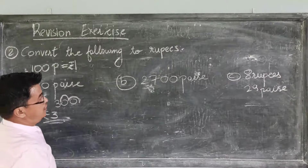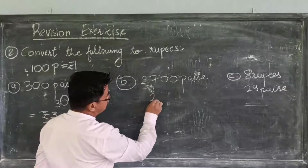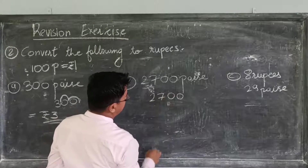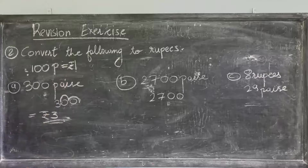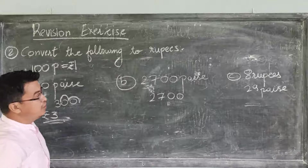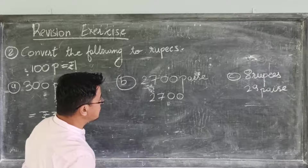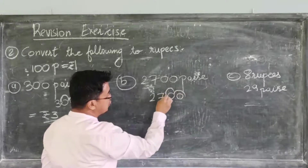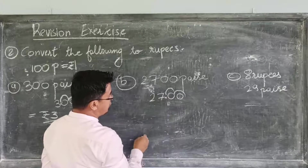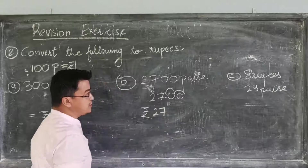Now, B. 2700 paise. We know that 100 paise is equal to 1 rupee. To convert 2700 paise into rupees, you divide by 100. Leave 2 places from the right and put a dot. That is rupees 27.